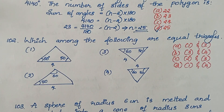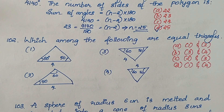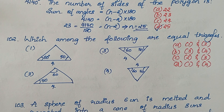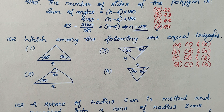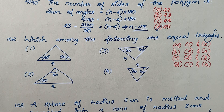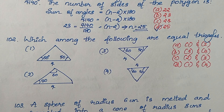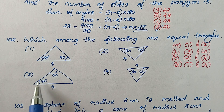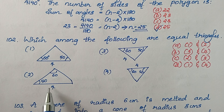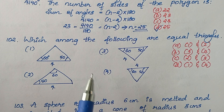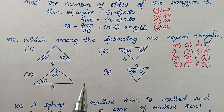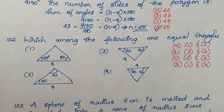Question 102: Which among the following are equal triangles? In the figure, two angles and one side are given. Two triangles are congruent when two angles and one side are equal.